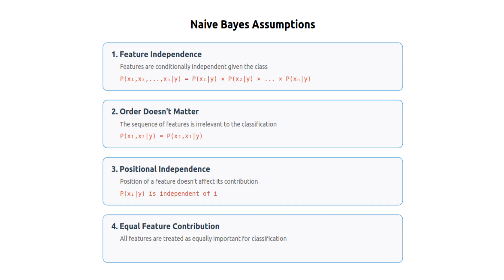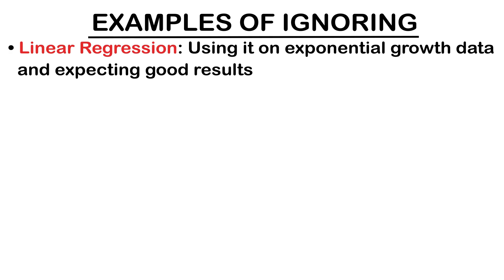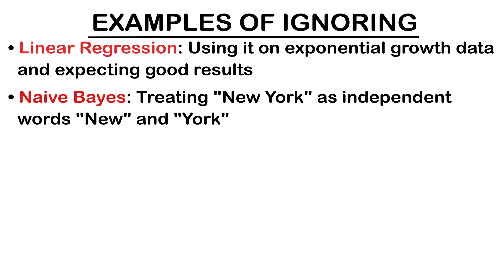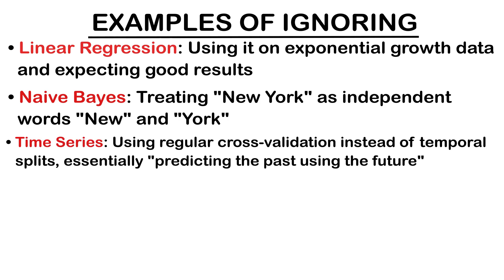Check your data distributions and relationships. Here are clear examples of ignoring model assumptions: linear regression — using it on exponential growth data and expecting good results; Naive Bayes — treating 'New York' as independent words 'New' and 'York'; time series — using regular cross-validation instead of temporal splits, essentially predicting the past using the future.